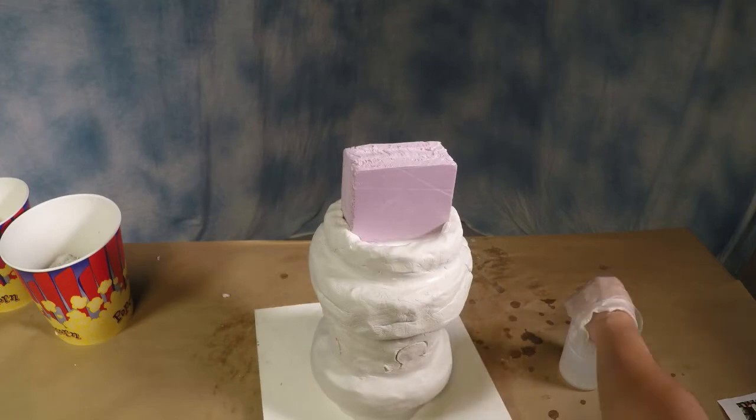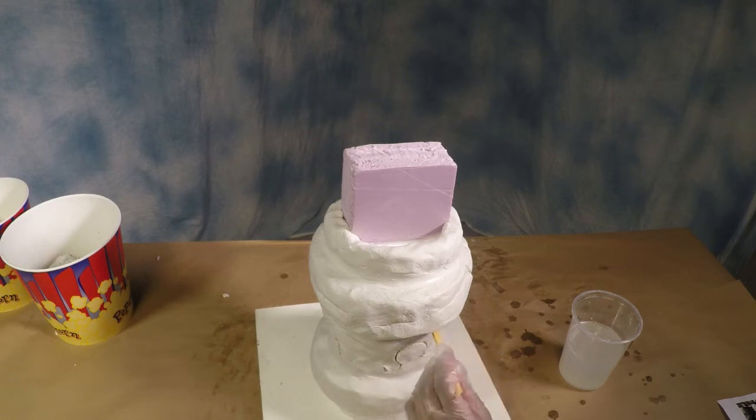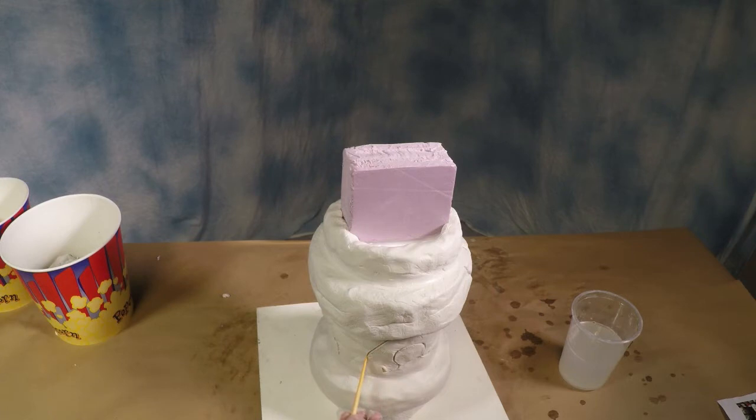Again, we're going to build up more epoxy to create the model. And as we do this, we're going to add detail along the way. And as you can see, it's very simple to add detail to the putty.